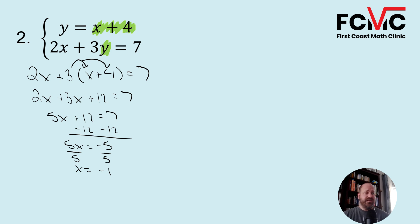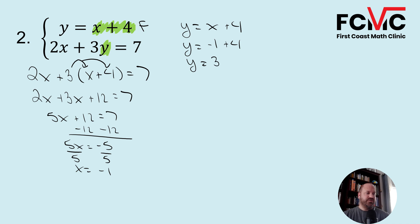We know x is negative 1. Let's substitute that back into one of our original equations — I'll use the top equation because it's easier to work with: y equals x plus 4. Substituting negative 1 for x: y equals negative 1 plus 4, so y equals 3. Our solution is (negative 1, 3).